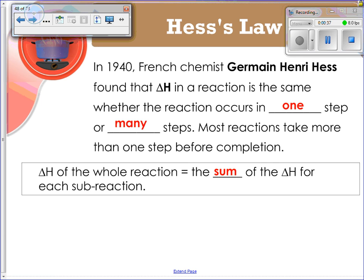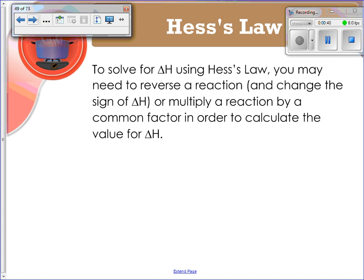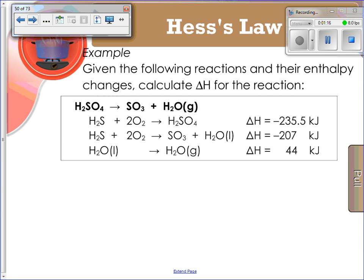You're going to solve it like a puzzle. When solving for delta H using Hess's law, you have to manipulate the different sub-reactions to create the main reaction. You might have to reverse a reaction, which changes the sign of your delta H. You might have to multiply a reaction by a common factor to calculate the value for delta H. We're going to manipulate these sub-reactions to create one large total reaction.